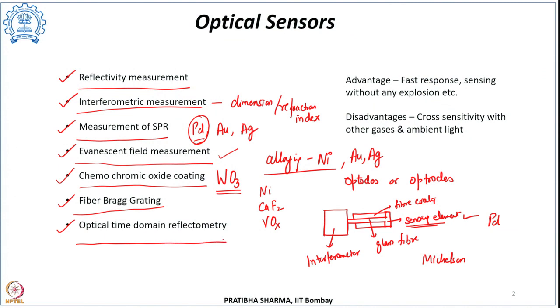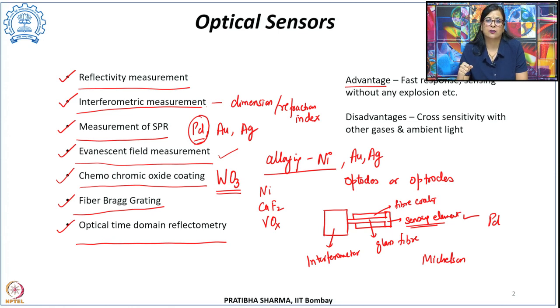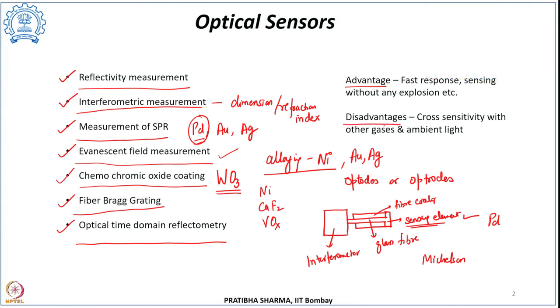Another technique is optical time domain reflectometry, where reflectance is measured along the entire length of the fiber optic cable rather than at a single point. This enables distributed hydrogen sensing using only one device, with spatially resolved signals over a longer distance. Optical sensors have advantages including faster response and reduced risk of explosion since no oxidizers or electric current are required. However, they have a disadvantage of cross sensitivity, where signals from other gases or ambient light interfere with hydrogen detection.